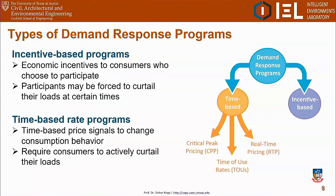An audience member raises privacy as a challenge, since consumers must share a lot of energy consumption data — for example, through smart meter data. Another participant notes the biggest problem is the inability to make a compelling business case for demand response, because there is no accurate model of demand behavior in response to incentives. Without such a model, we can't assess the real potential of demand response or determine what consumers would have done if no incentives had been provided.